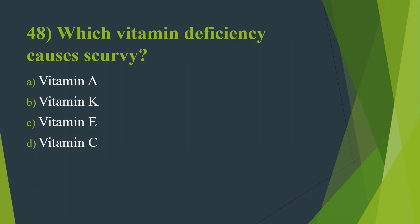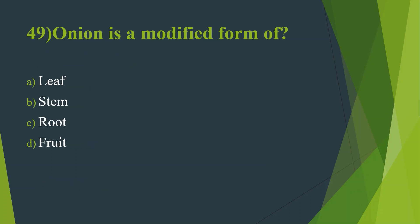Forty-eighth question: Which vitamin deficiency causes scurvy? Option A, Vitamin A. Option B, Vitamin K. Option C, Vitamin E. Option D, Vitamin C. Answer is Option D, Vitamin C.